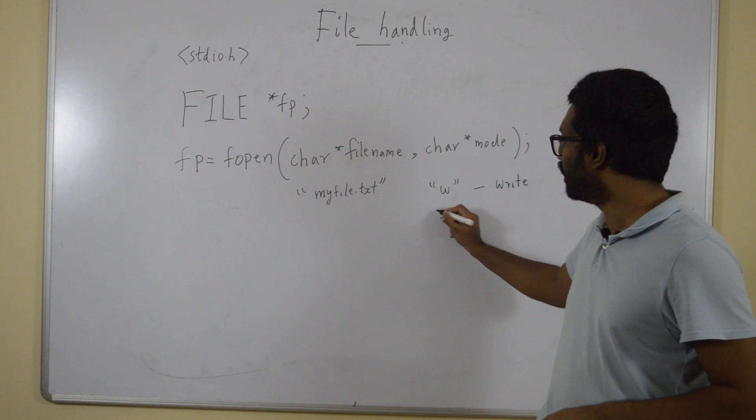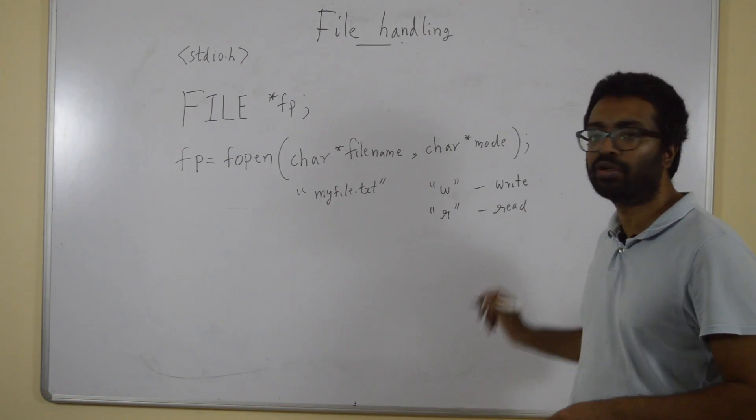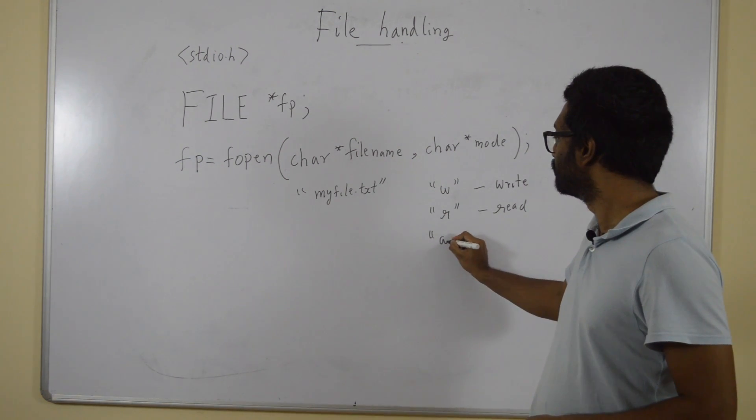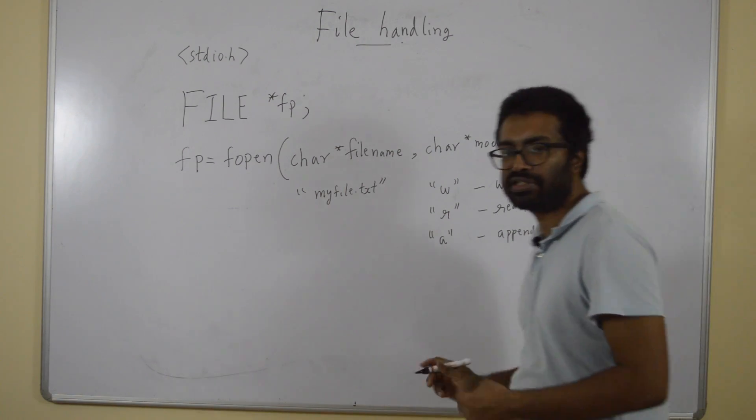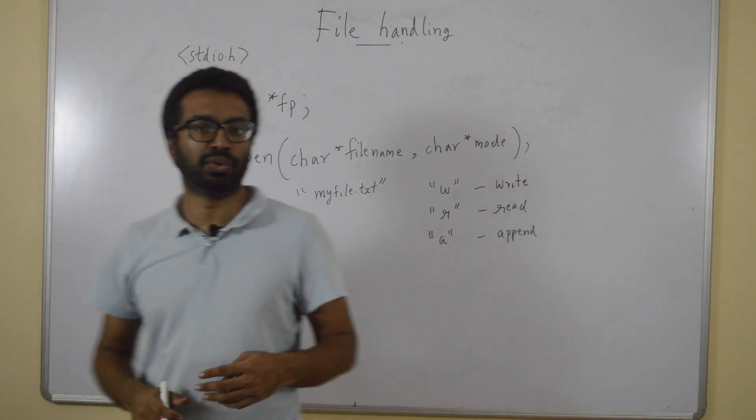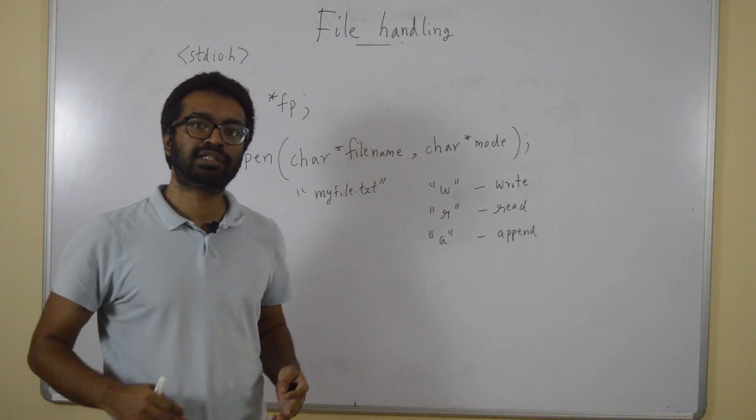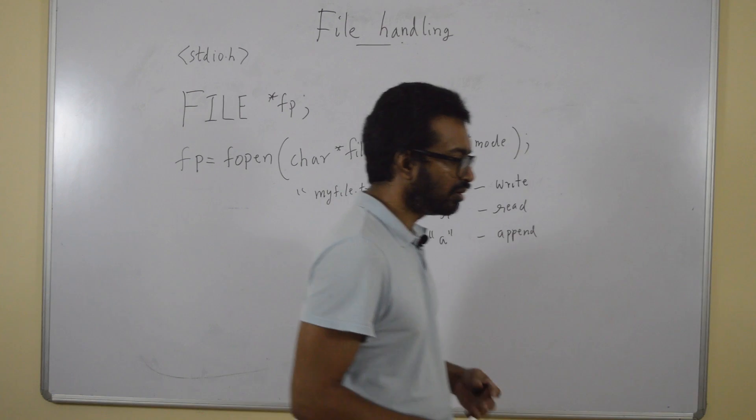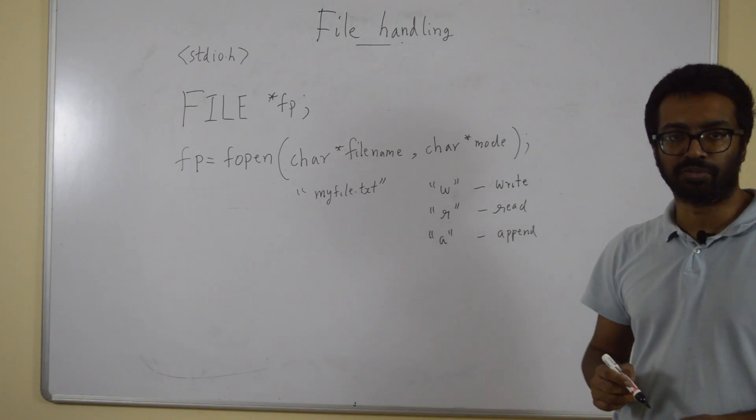If it's R, I want to open the file for reading. And if it's A, I want to append into the file. That is, if the file already exists, I want to add at the end of the file. On the other hand, if the file does not exist, it's going to create a new file. That's fopen.